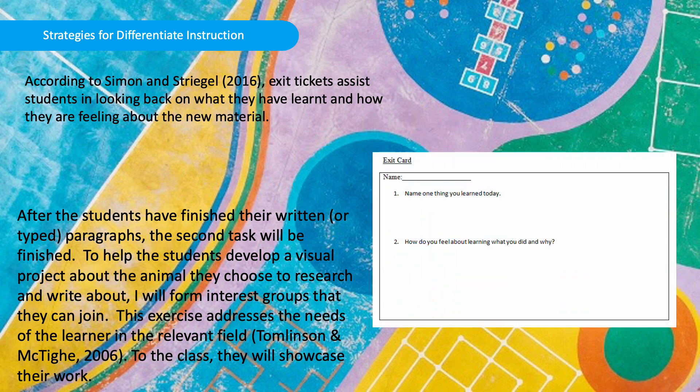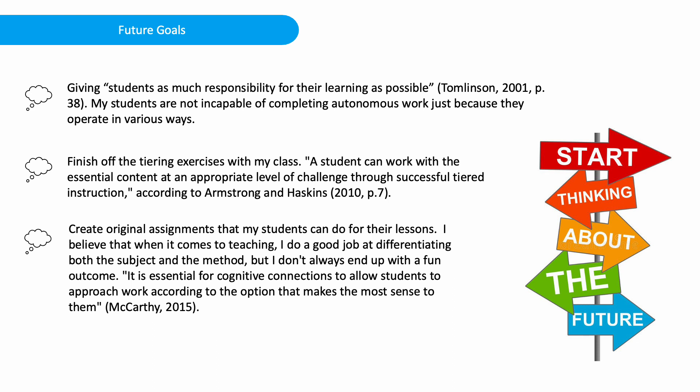This is an example of an exit card. Some future goals include giving students as much responsibility with their learning as possible. My students are not incapable of completing work just because they operate in various ways. Finishing off the tiering exercises with my class — a student can work with the essential content at an appropriate level of challenge through successful tiered instruction. I want to create original assignments my students can do for their lessons. I believe I do a good job differentiating both the subject and method, but I don't always end up with a fun outcome. It is essential for cognitive connections to allow students to approach work according to the option that makes the most sense to them.